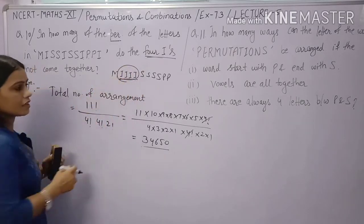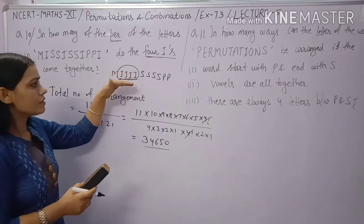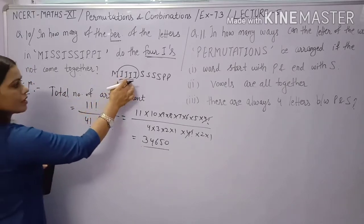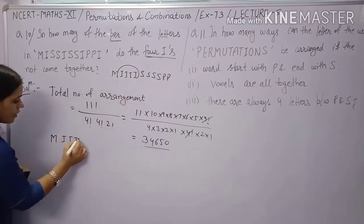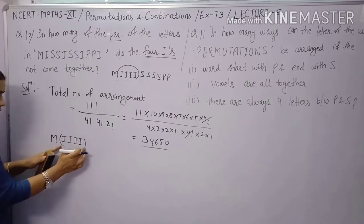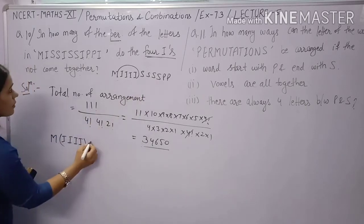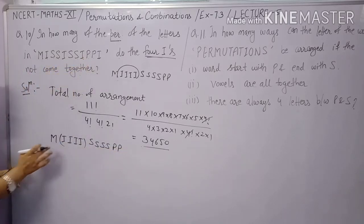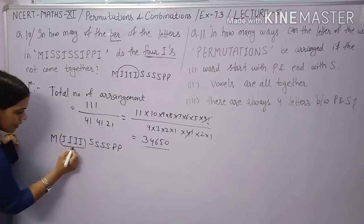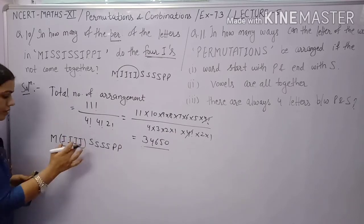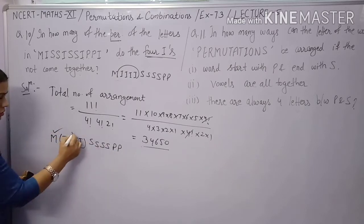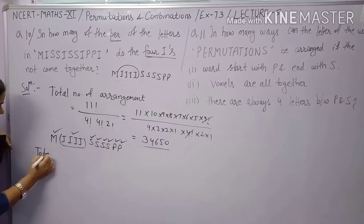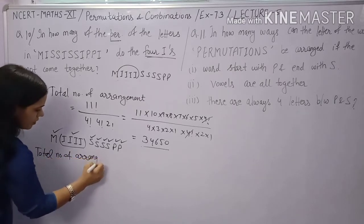Now find arrangements where all four I's come together. Treating the four I's as one unit, we get 8 letters total: (IIII), M, S, S, S, S, P, P. Arrangements = 8! / (4! × 2!) = 8 × 7 × 6 × 5 × 4! / (4! × 2!) = 840.